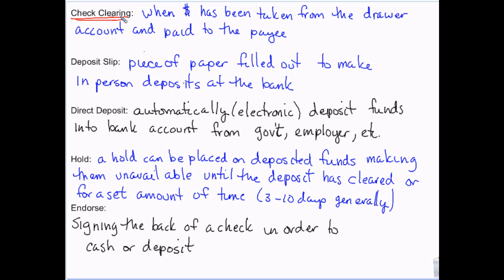The teller will type the deposit into your account at that time. But if something goes wrong and that information doesn't save, their drawer gets reconciled at the end of the night. If there's money not accounted for, they look back through the deposit slips to make sure all the cash or checks go into the account they were meant to go into. So it's like a backup system for balancing the books of the bank at the end of the night.